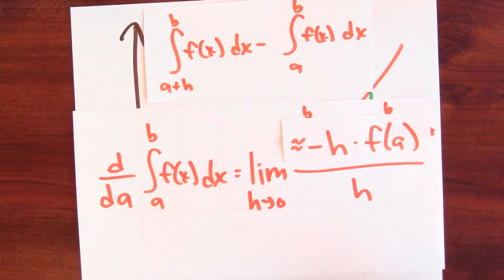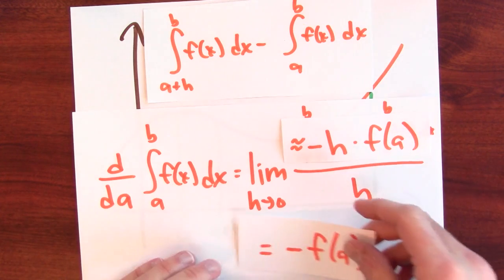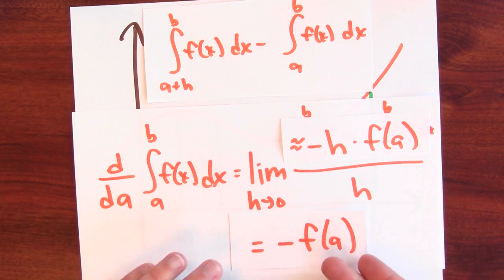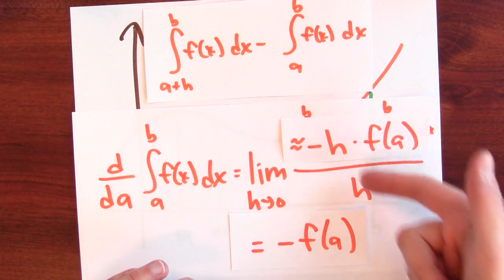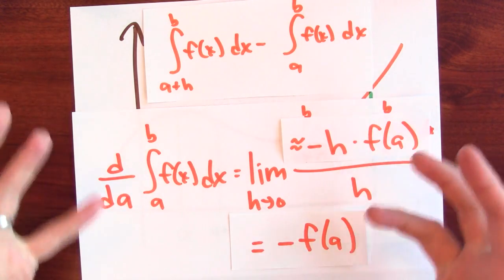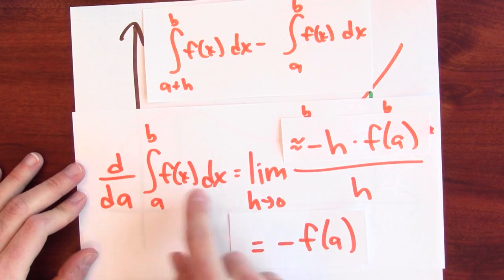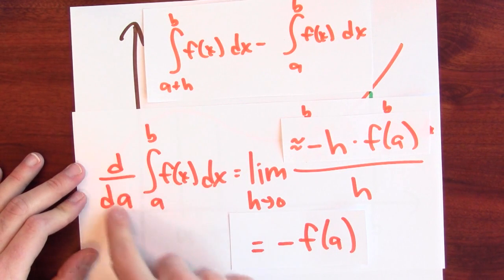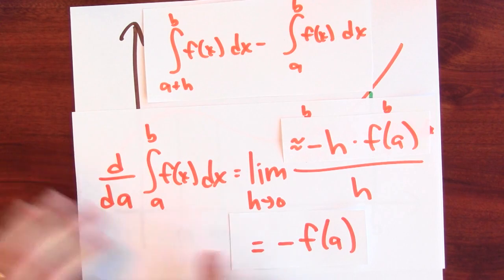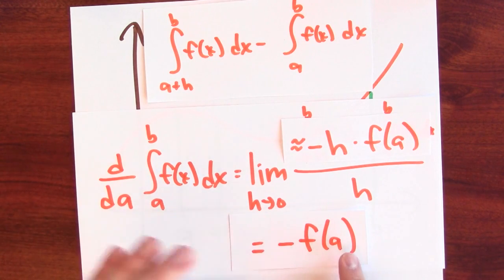And that means in the limit, I expect to get an answer of just negative f of a, right? These h's will cancel in the limit. And that's exactly what I hope for. The derivative of the integral from a to b with respect to the left-hand endpoint a is negative f of a.